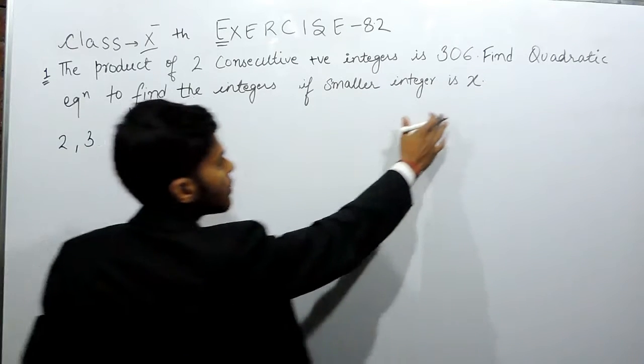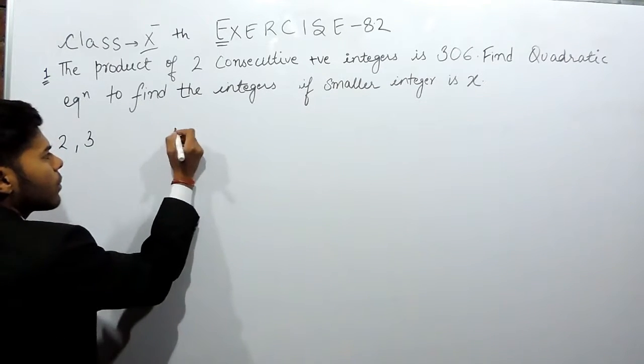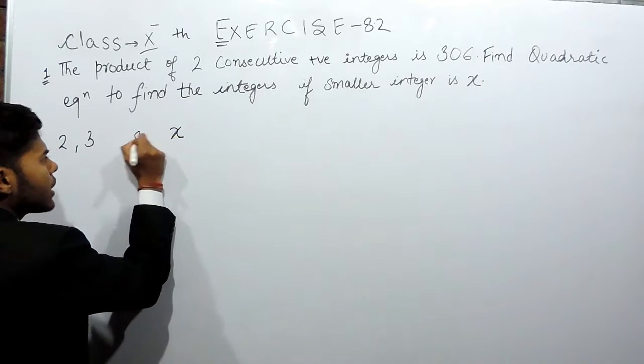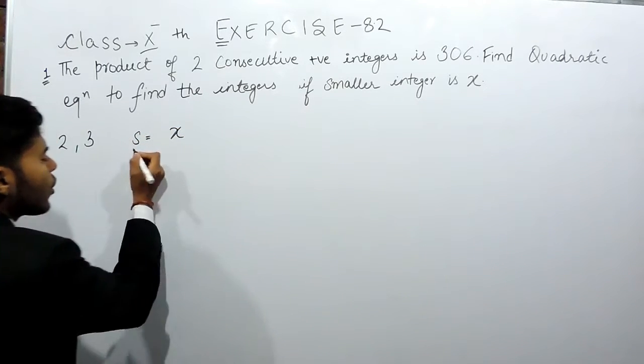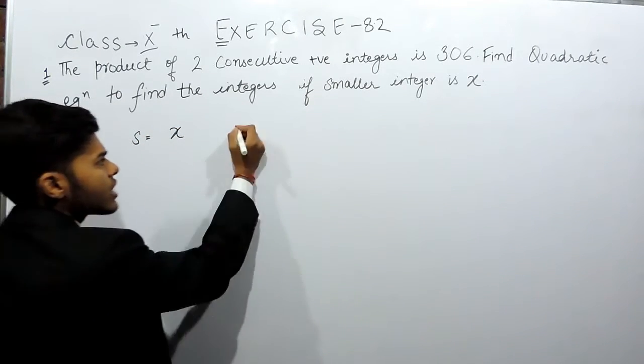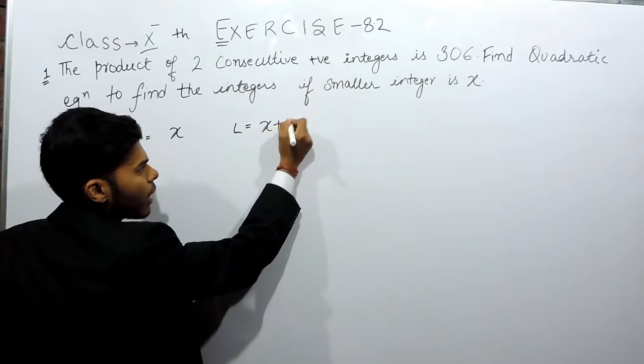Now we are given one number to be x, and this is the smaller number. So smaller number equals to x, I am denoting it by s. So the larger number will be equals to x plus 1, one greater than the smaller number.